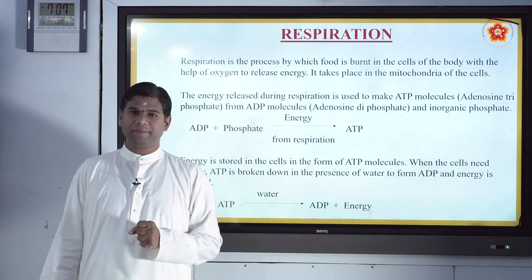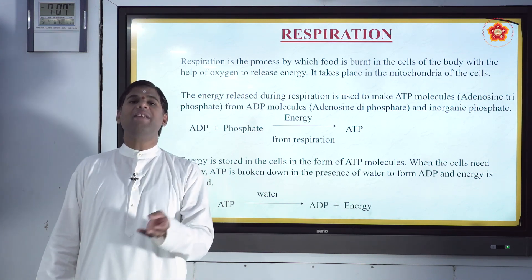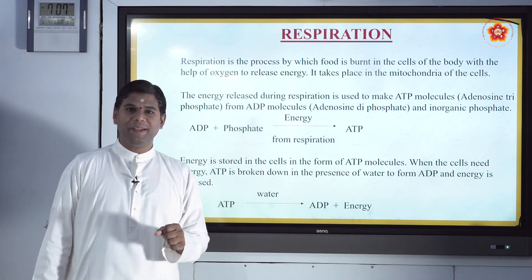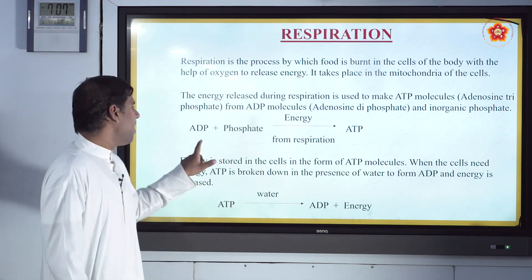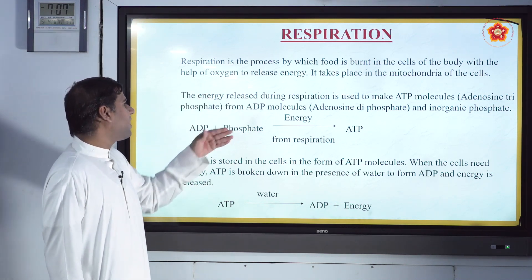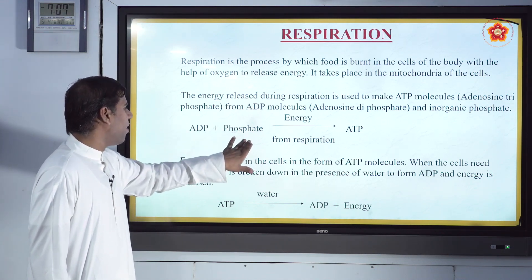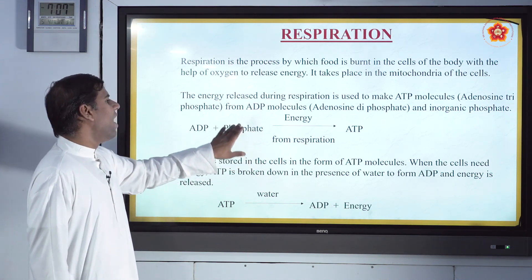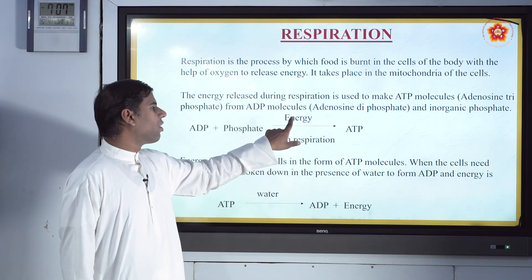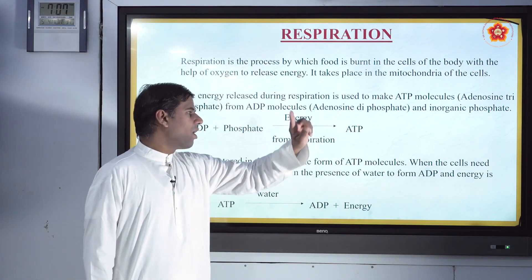What is ATP? ATP means adenosine triphosphate. And what is ADP? ADP means adenosine diphosphate. When ADP combines with phosphate — when respiration takes place and energy is given out — ATP molecules are produced.